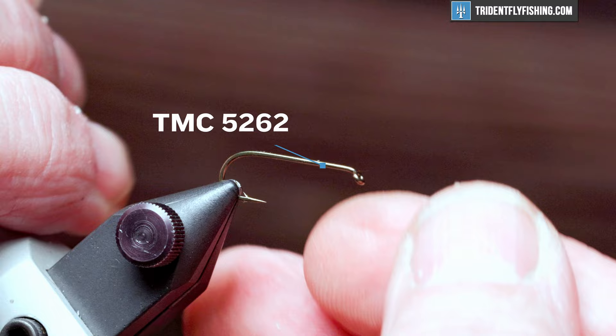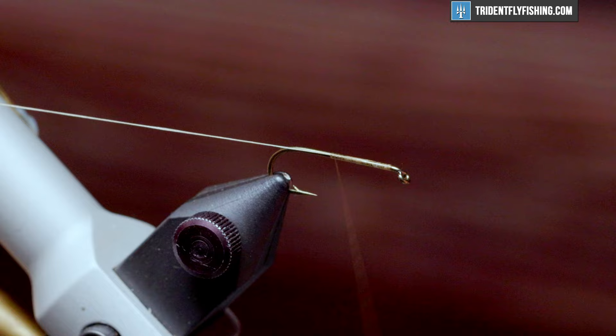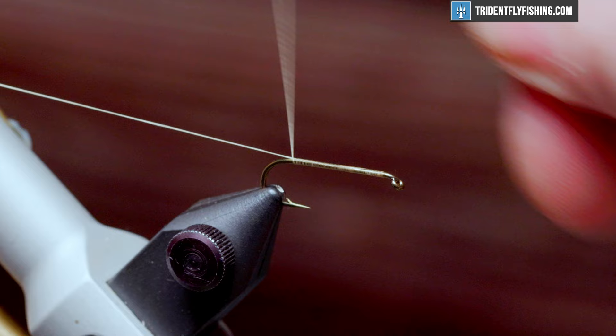The hook we're going to use today is a TMC 5262. This is a size 10. And our thread is going to be some UTC 70 denier in tan. We'll start our thread right behind the hook eye. So we'll run our thread back to the hook bend. This is going to form a base for the body, the foam body of the fly.